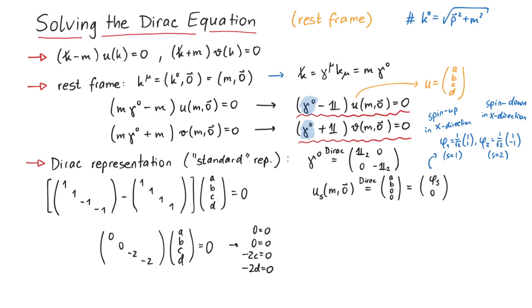Finally, we have to talk about how to call these things. The four-component object u is called a Dirac spinner, or bispinner, whereas the two-component object phi is called a Weyl spinner, or just spinner.